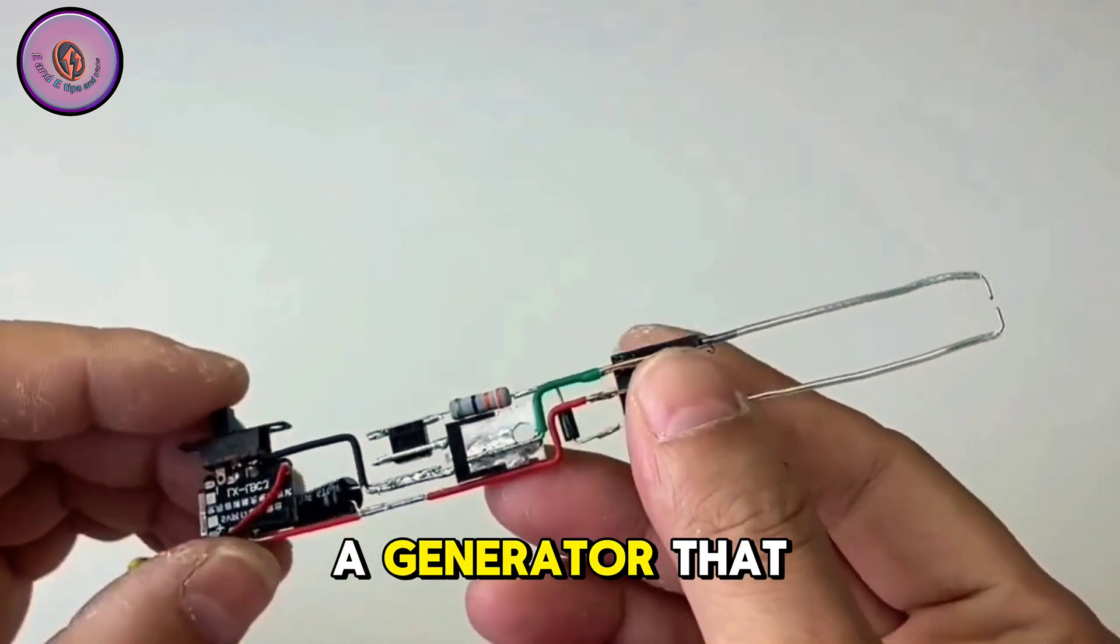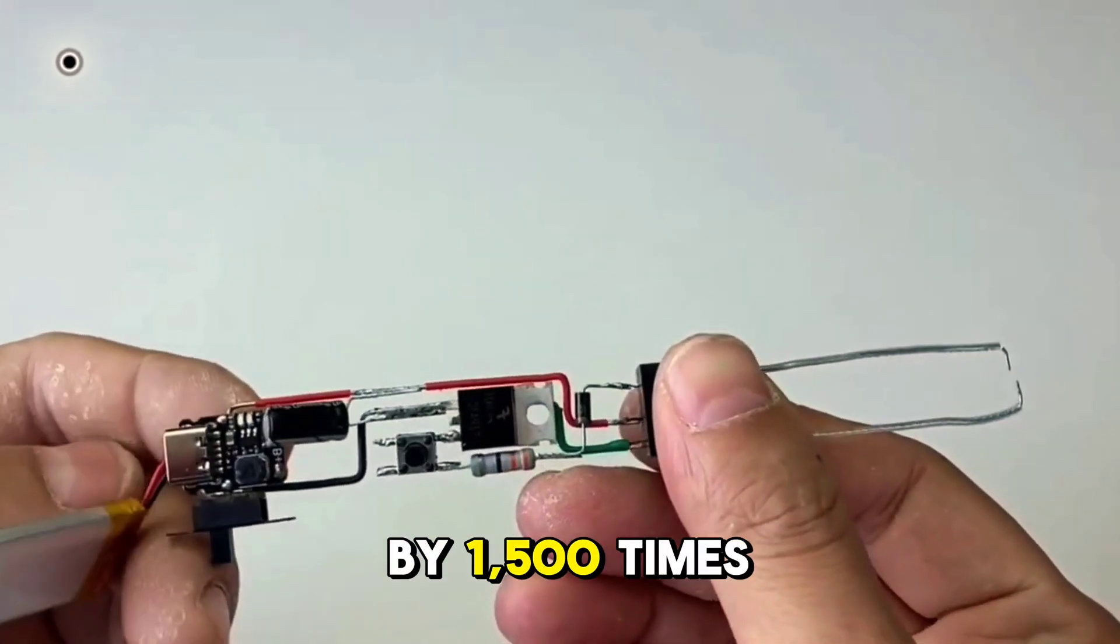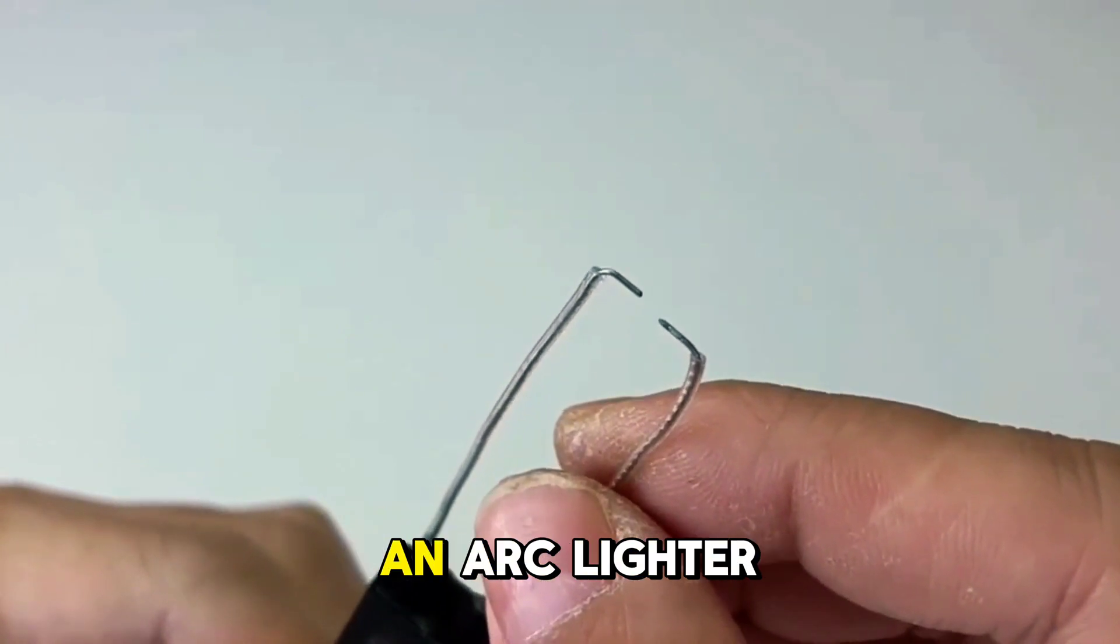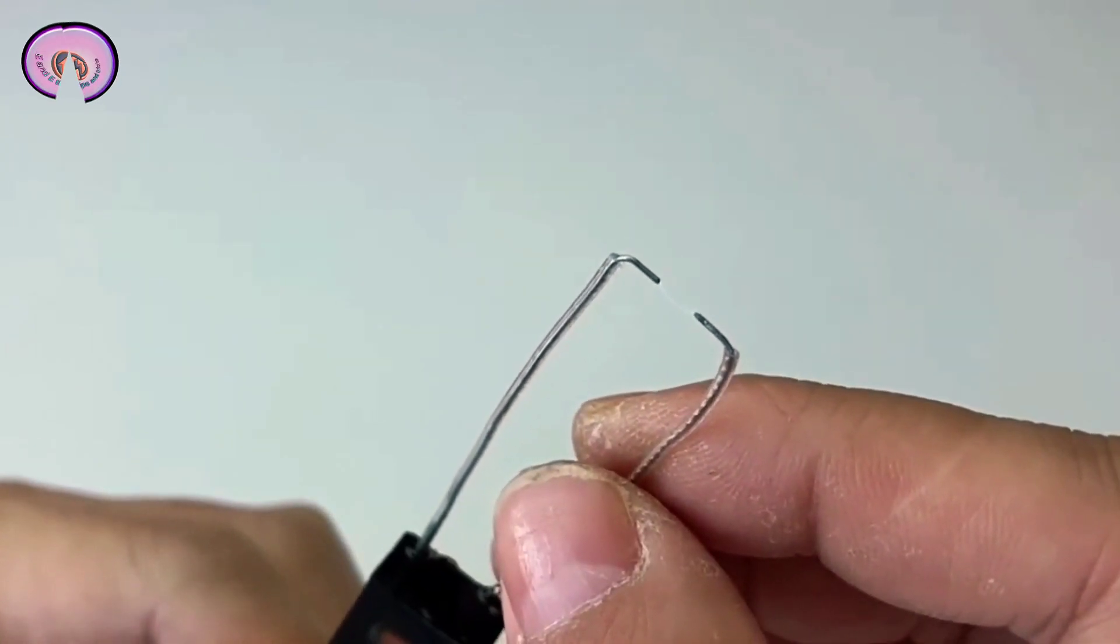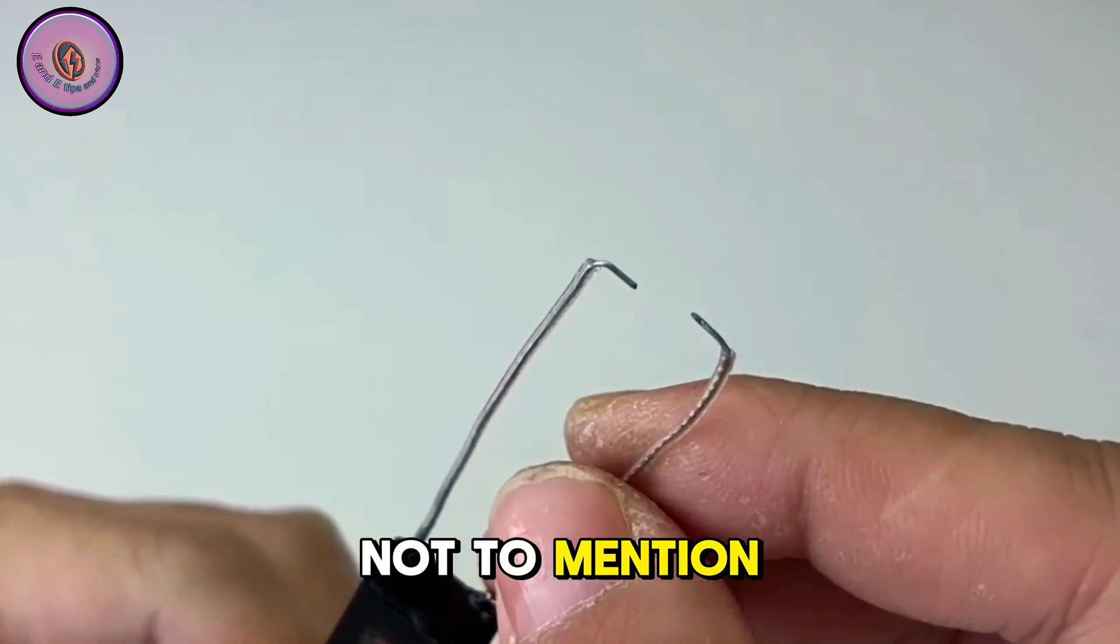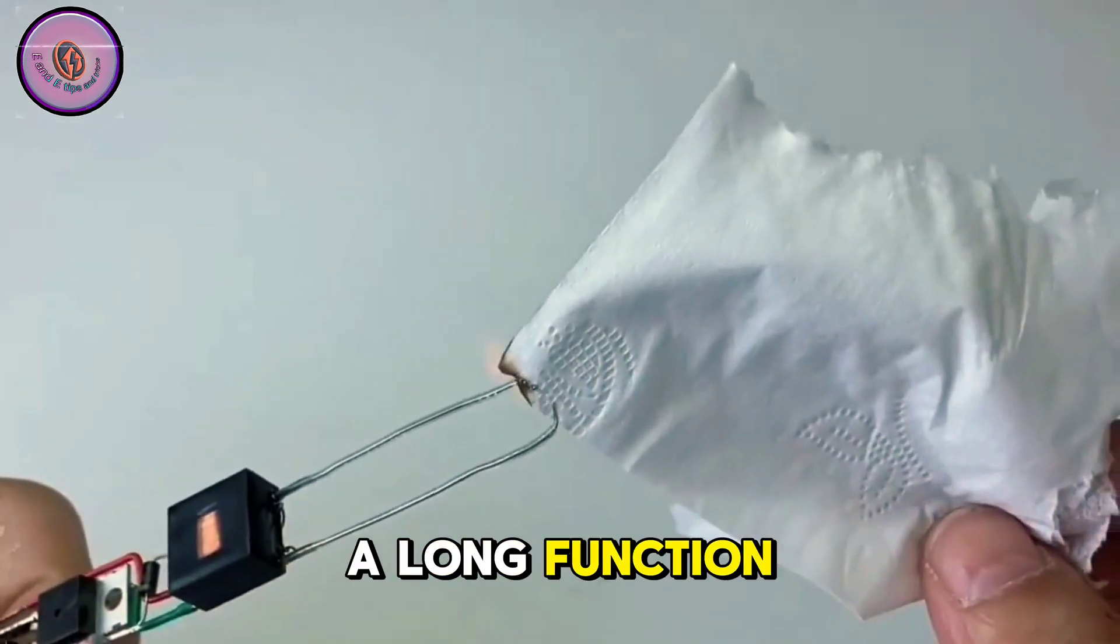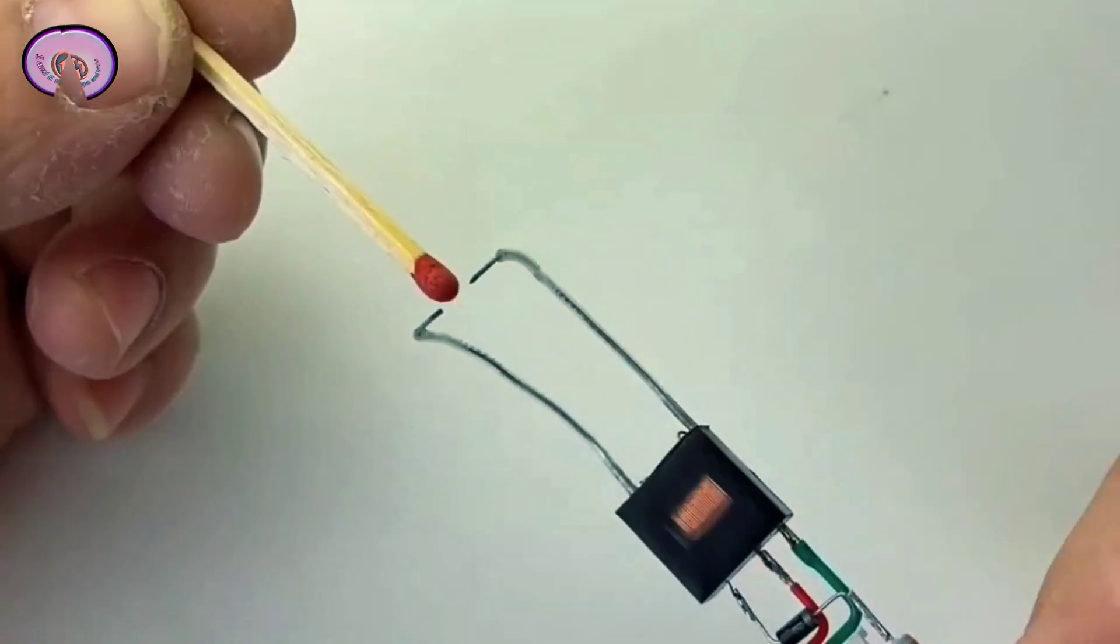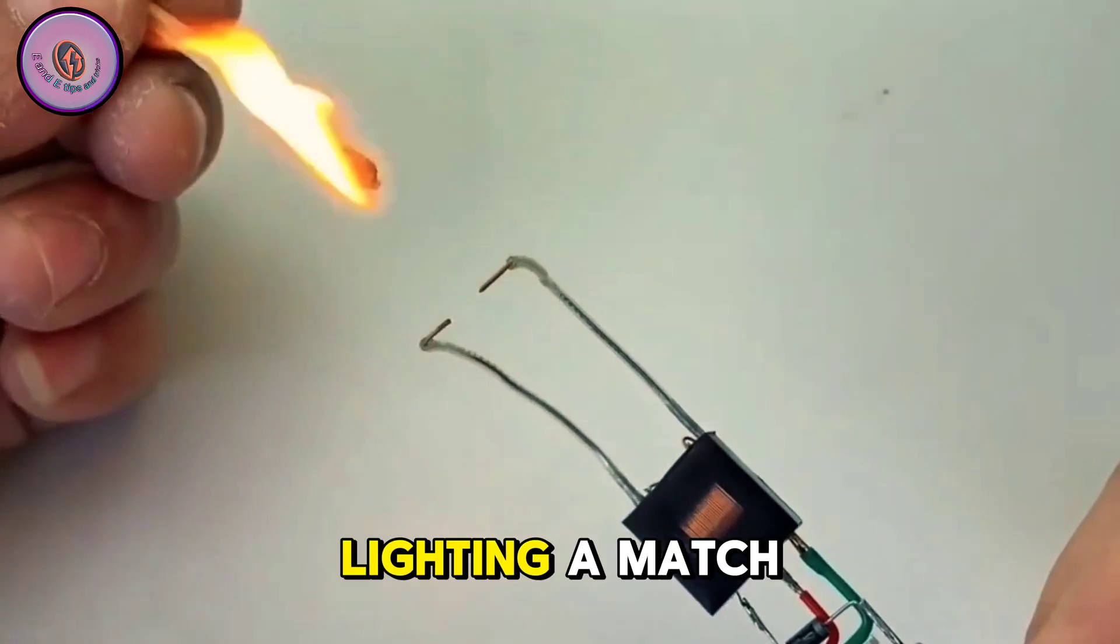This completes a generator that amplifies the voltage by 1,500 times, working on the same principle as an arc lighter. However, the structure of an arc lighter is much simpler. Not to mention that the arc can pull a long distance.